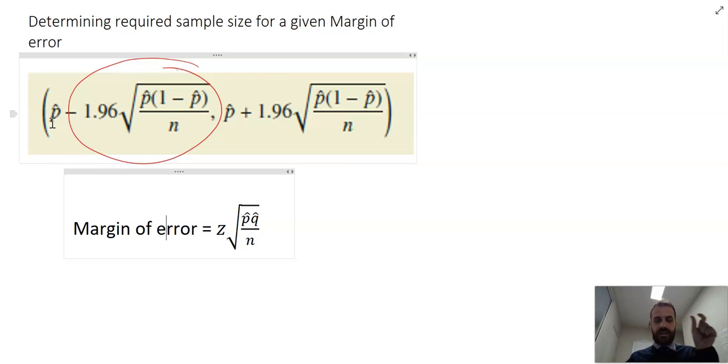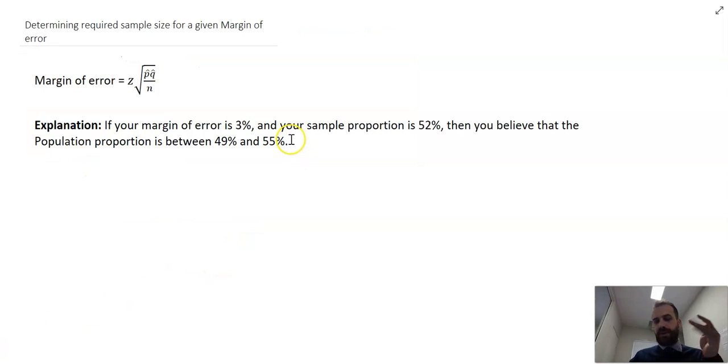So our margin of error tells us what percentage above or below we are the actual population. Explanation there: if your margin of error is 3% and your sample proportion is 52%, then you believe that the population proportion is between 49% and 55% within whatever confidence interval you've got - 95%, 99%, 90%.